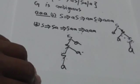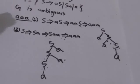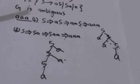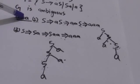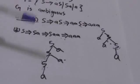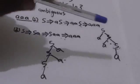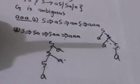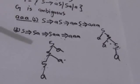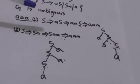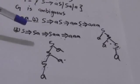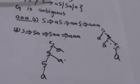Grammar G is an ambiguous grammar because its language has the string A A A which has more than one derivation trees, or we can say which has more than one leftmost derivations. Thank you.